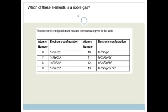First of all it says, which of these elements is a noble gas? If we know the noble gases have an outer electron shell which is full, and we know that S orbitals have a maximum of 2 electrons and P orbitals have a maximum of 6, we can say it's obviously going to be this one here. It is number 10.